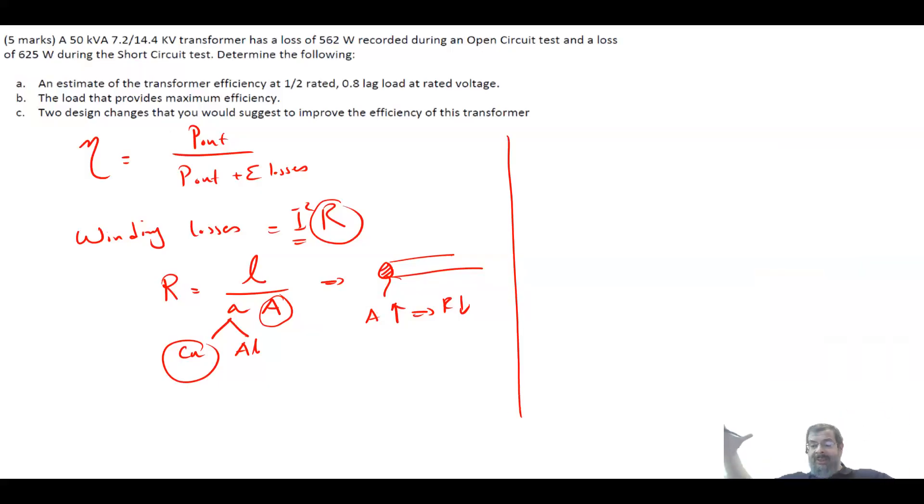Now, this will lead to having a bigger winding, bigger tank, more oil. So the cost, of course, will increase when you increase the efficiency of the transformer. So this is coming from the winding loss.